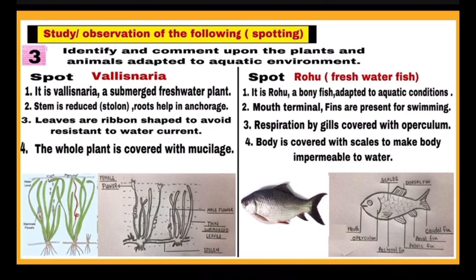Here is the third category of spots: you have to identify and comment upon plants and animals adapted to aquatic environment. First spot is the plant Vallisneria. It can be shown to you as a specimen, chart, or model. After identification, write: point one, it is Vallisneria, a submerged plant meaning completely dipped in water, and it is found in fresh water. Point two: the stem is reduced and stoloniferous, and roots help fix the plant. Point three: leaves are ribbon-shaped so that they can withstand water currents. Point four: the whole plant is covered with mucilage which protects it from decay. After writing this, draw the diagram and label the important parts.